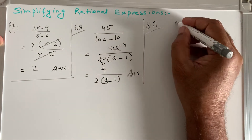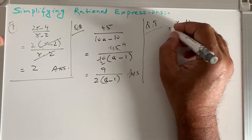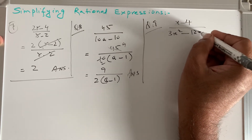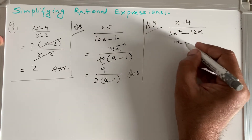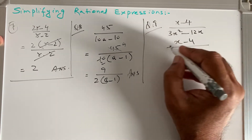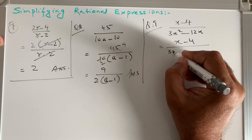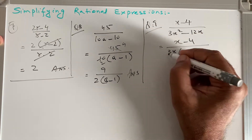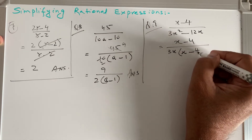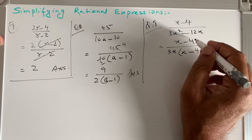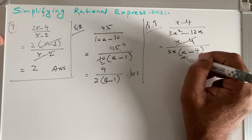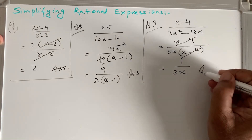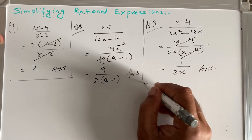Question 9: (x - 4) / (3x² - 12x). In the denominator, 3x is common: 3x(x - 4). Then (x - 4) cancels with (x - 4) in the numerator. The answer is 1 / (3x).